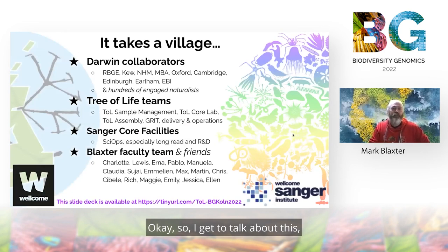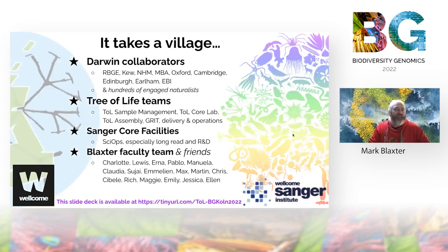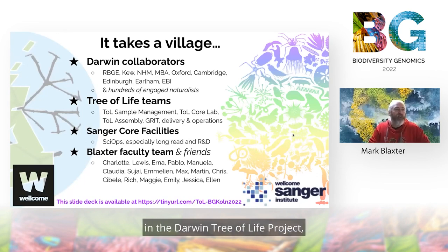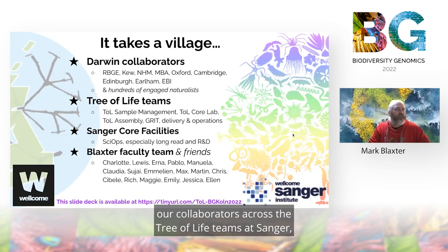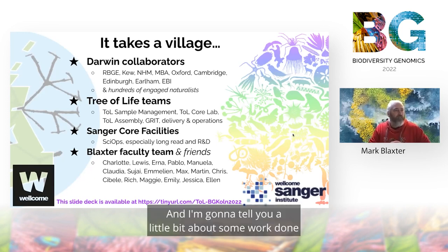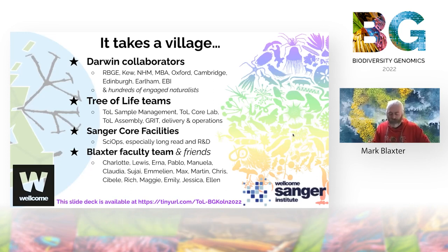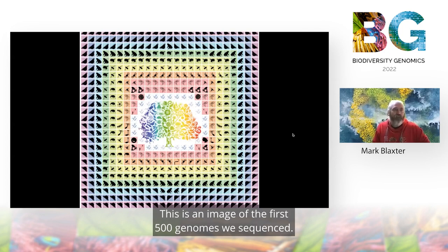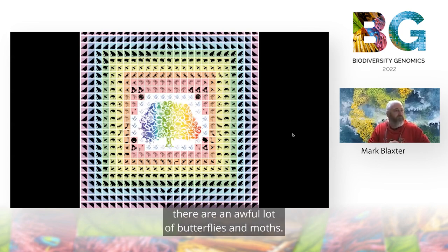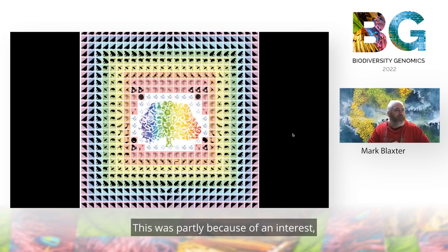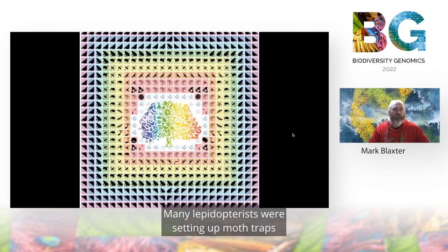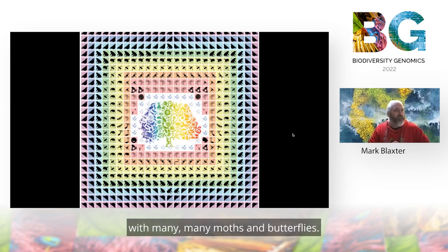It takes a village of people to do this, and we couldn't have done it without our collaborators in the Darwin Tree of Life project, the Tree of Life teams at Sanger, and the Sanger core facilities, especially the sequencing and informatics services. I'm now going to tell you a little bit about some work done by people in my group using these genomes to understand biology. This is an image of the first 500 genomes we sequenced. You'll notice around the outside there are an awful lot of butterflies and moths — partly because of interest, but also because these were relatively easy to catch during the coronavirus lockdown. Many lepidopterists were setting up moth traps in their back gardens during lockdown, both for their own sanity and to help our project.